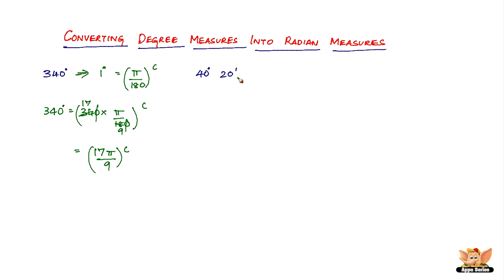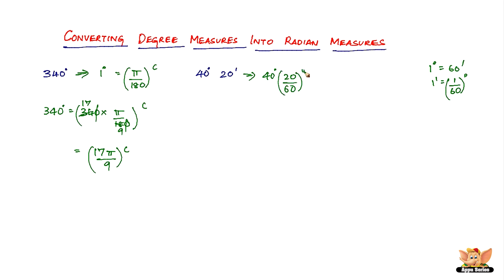We know that 1 degree equals 60 minutes, so 1 minute equals 1/60 degrees. Therefore, 20 minutes equals 20/60 degrees, which simplifies to 1/3 degrees. So the total is 40 degrees and 1/3 degrees.